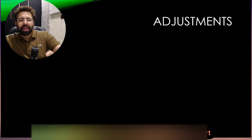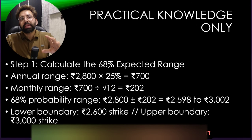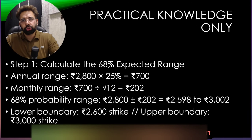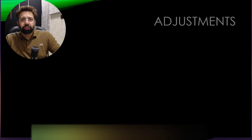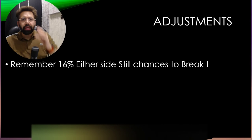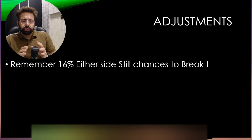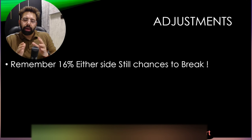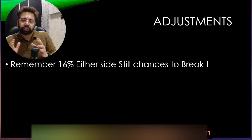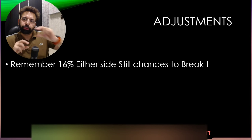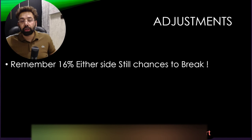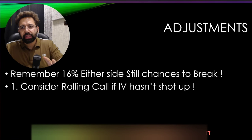Now let's talk about how to make it even better, because this is a probability game. In fact, any business in the world is a probability game. Now let's talk about adjustment — what if it breaks the range? There is a 68% chance it stays in range, but a 32% chance it breaks it: 16% on the call side and 16% on the put side. Simple maths — no rocket science. At least we have numbers telling us what to do instead of shooting in the dark.